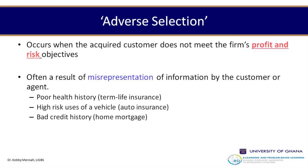Adverse selection is when the customer has been dishonest in terms of disclosures of their information — a case when the acquired customer does not meet the firm's profit and risk objectives, often as a result of misrepresentation of information by the customer or the agent. The risk profile is not properly known, and the consumer may not actually pay the prescribed premiums. It becomes an issue to the company when it is later found that the customer had a higher risk than initially thought.